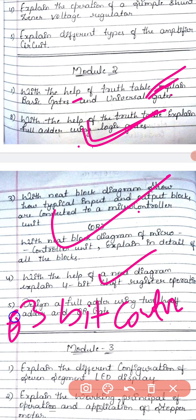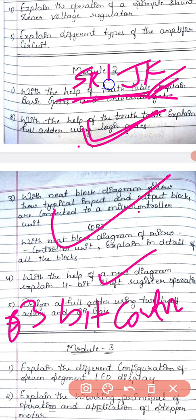Asynchronous or ripple counter is important. For flip-flops, I will remove the first question and add JK or SR flip-flop. If you study these questions you will definitely get 18 or 20 marks. So module 2 questions are: SR or JK flip-flop, full adder, microcontroller block diagram, 4-bit shift register, and 3-bit counter.